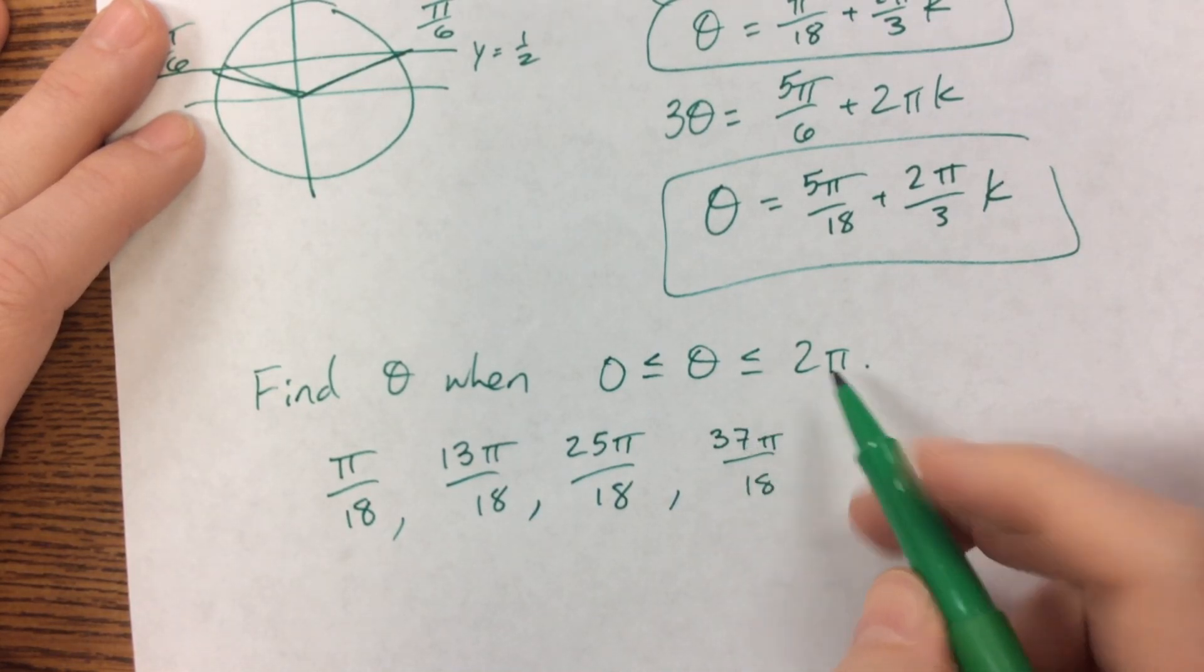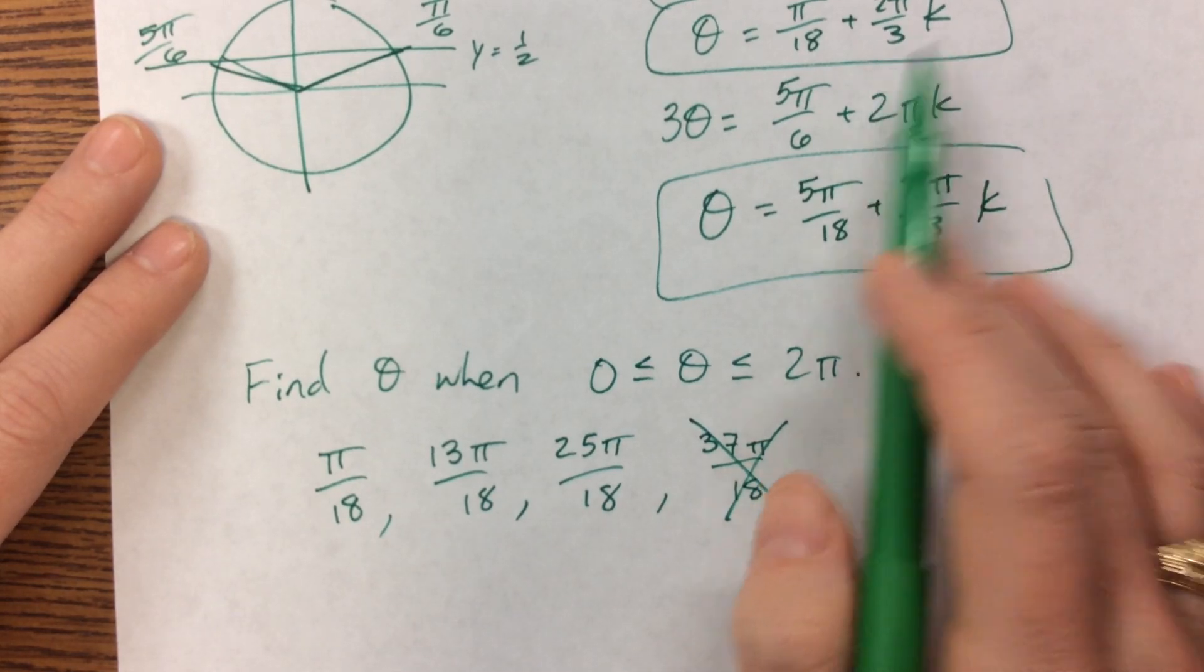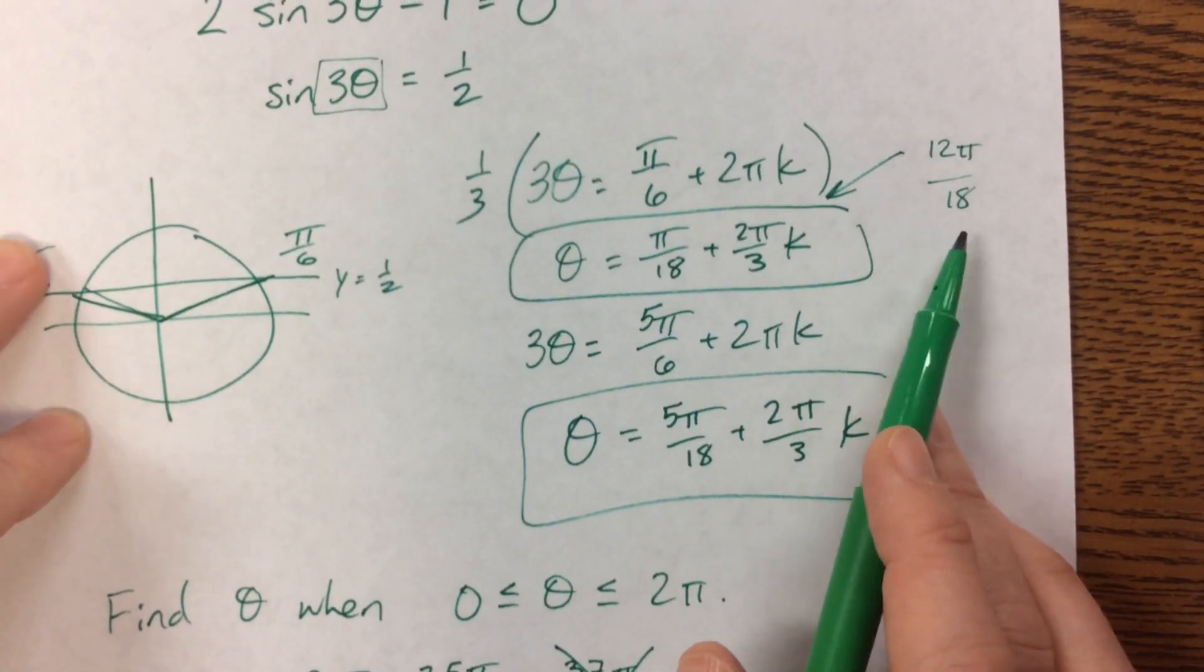That, you'll notice, is bigger than 2 pi. So this one, we're going to stop. We're not going to keep going by adding 2 pi. Why did I say 2 pi? 2 pi over 3, or 12 pi over 18.